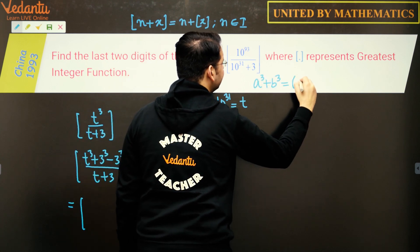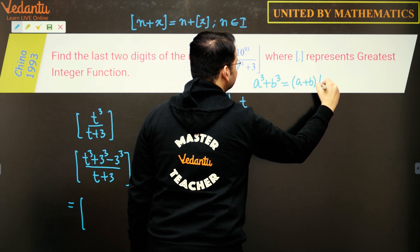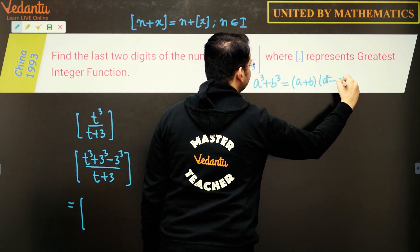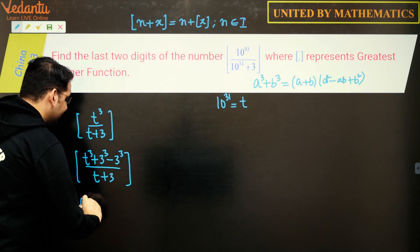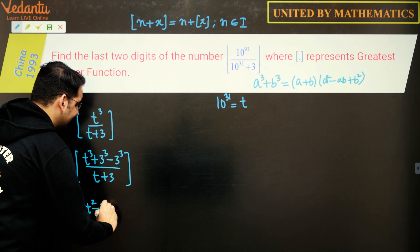If we separate the first part, t³ plus 3³, we'll be using the formula a³ plus b³, which is a plus b into a² minus ab plus b². So t³ plus 3³ would give me t plus 3 which gets cancelled out, so we have t² minus 3t plus 9.